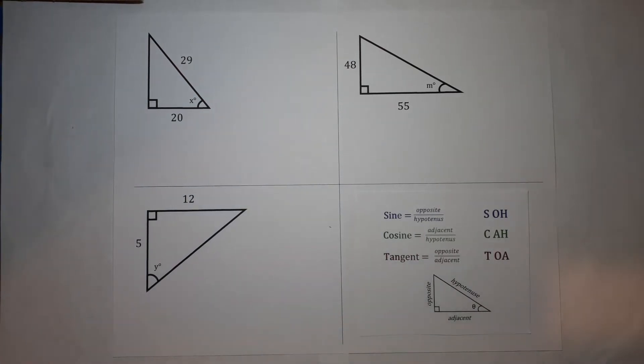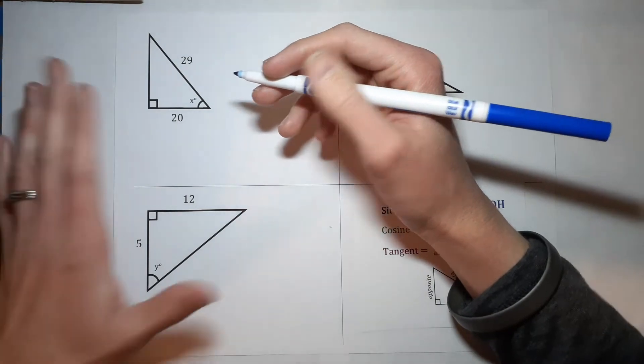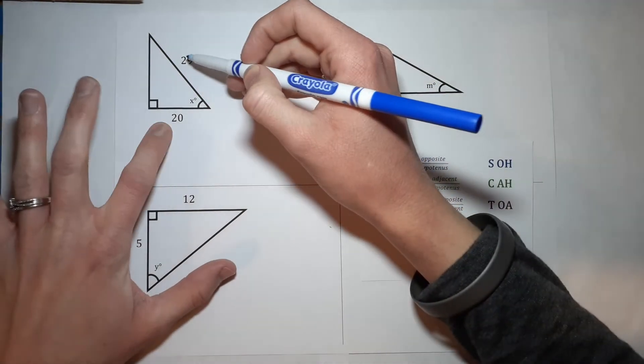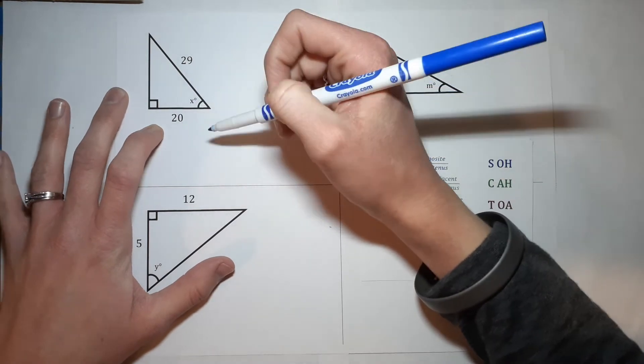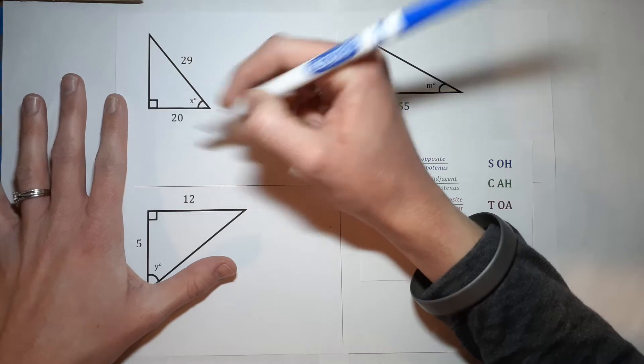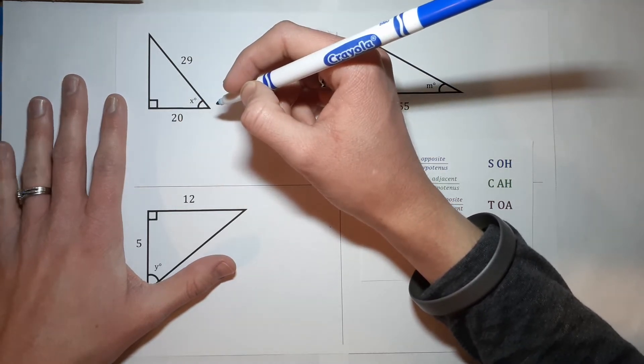You have probably been using these to find a side that's missing. Now we are doing something very similar. We have two sides, we want to know what the angle is. So you've probably been doing where you have the angle on one side and you find the other side, but now we have two sides and we're finding the angle.